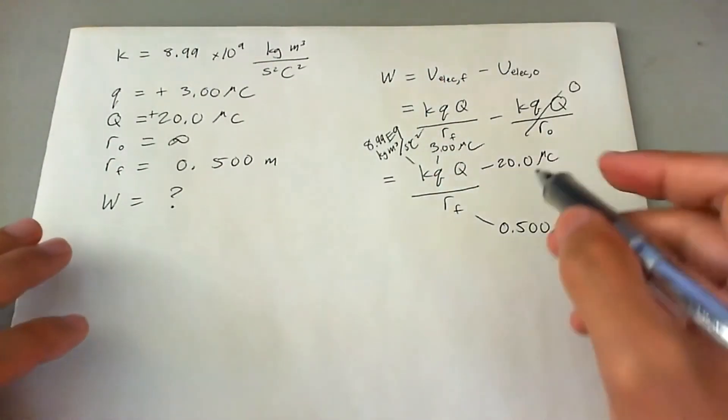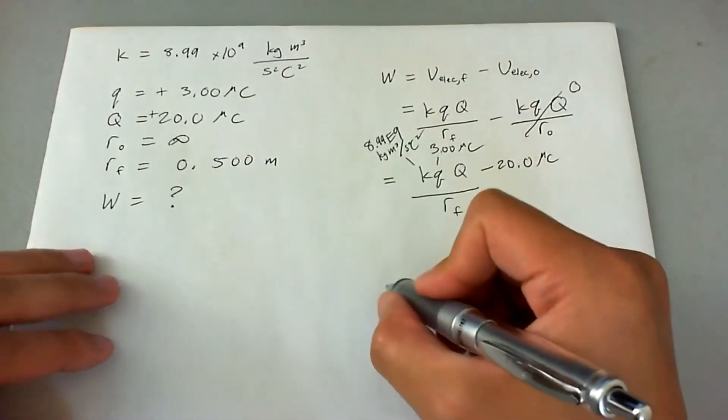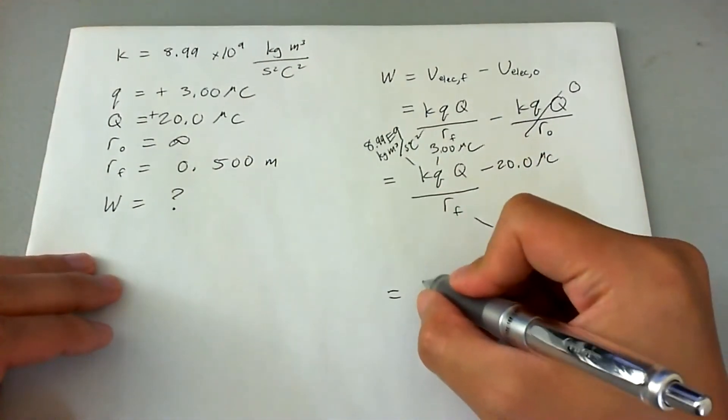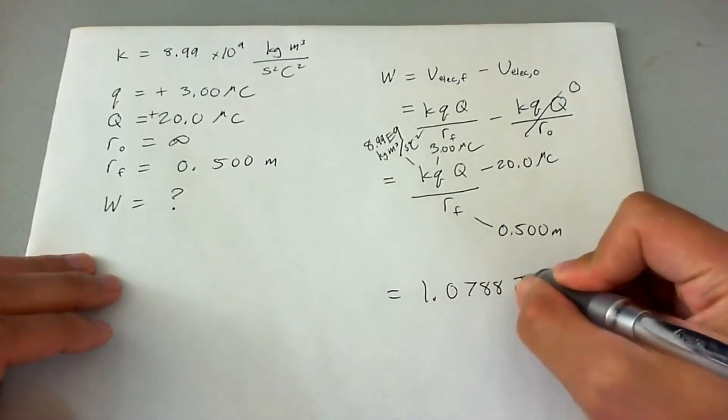So that's a little bit sloppy. But once you plug in all these numbers, plug it into your calculator, and you're going to get 1.0788 joules.